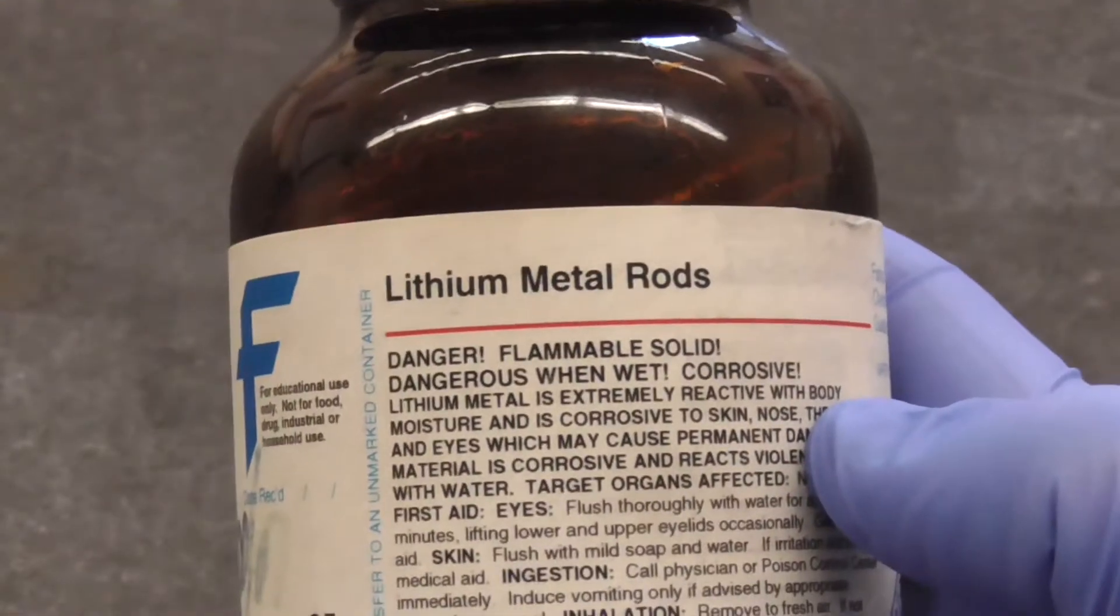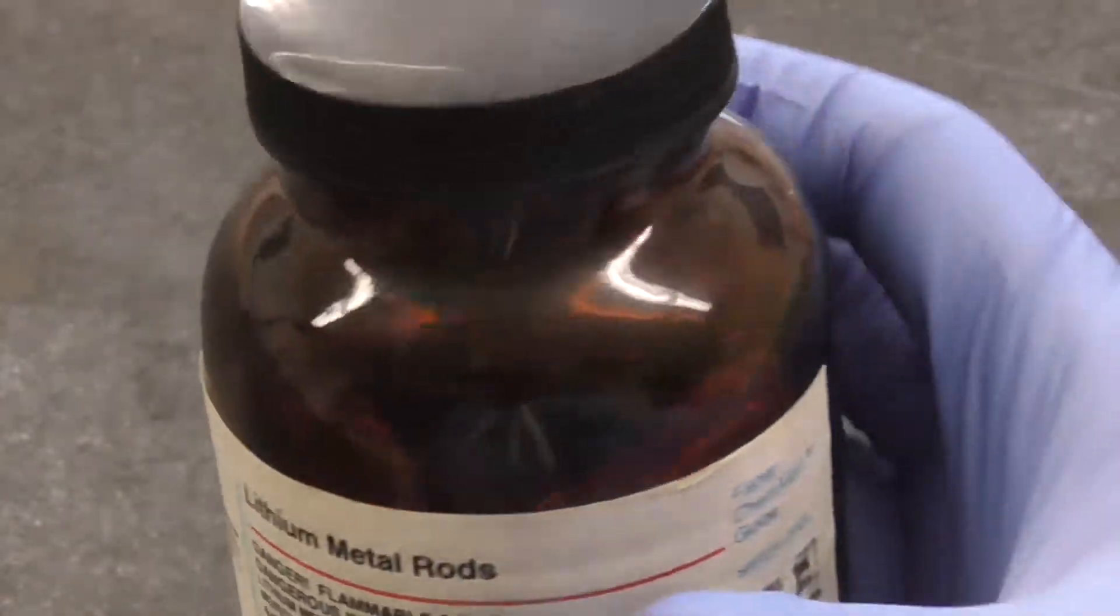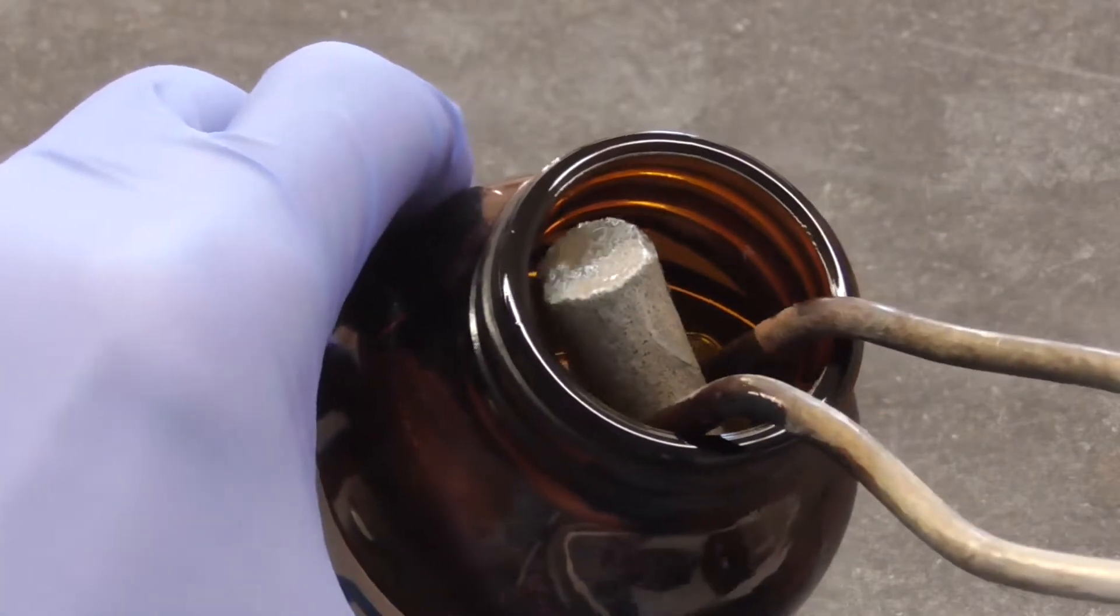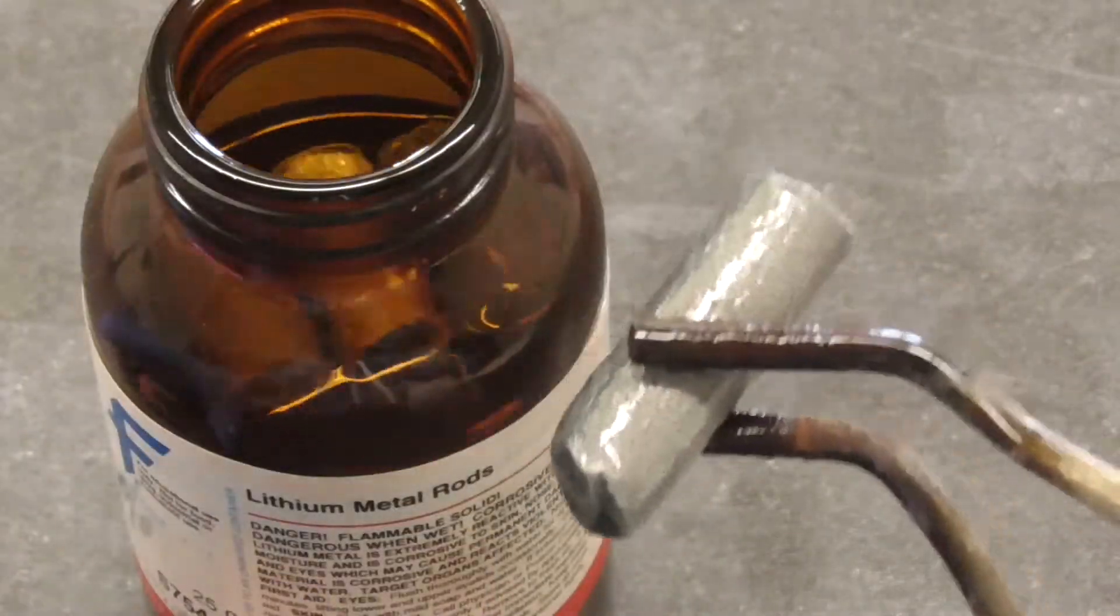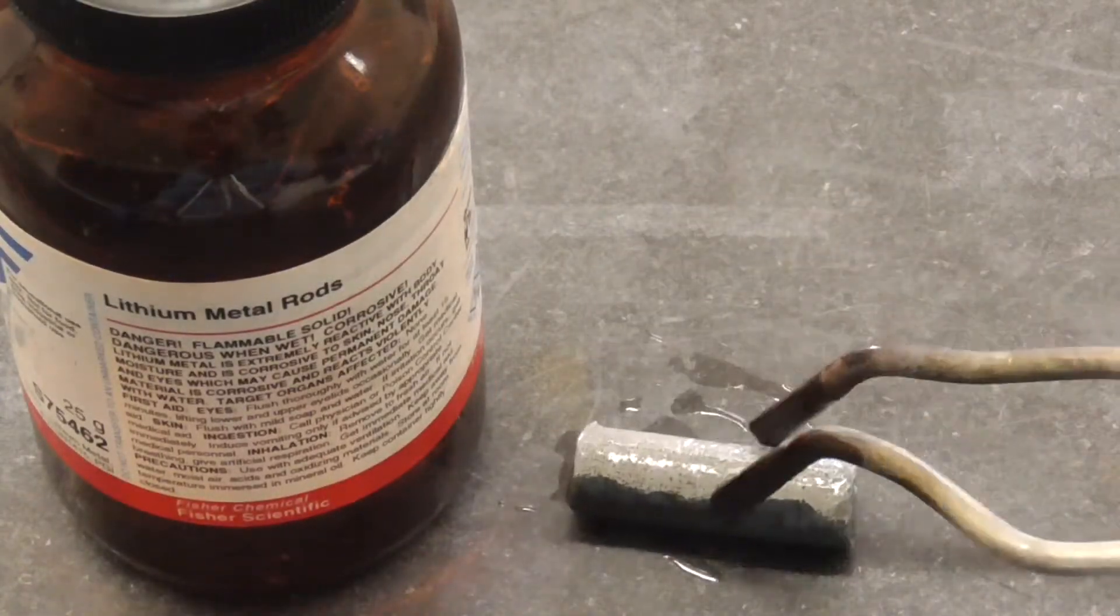Before I show you my attempts at doing so, I thought it would be a good idea to share with you some of the chemistry of lithium. Let's go ahead and take a metal rod of lithium out of this container and study some of its properties. Lithium metal is usually stored under oil in order to prevent it from reacting with oxygen in the air.